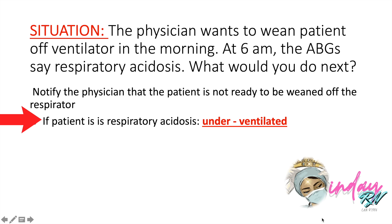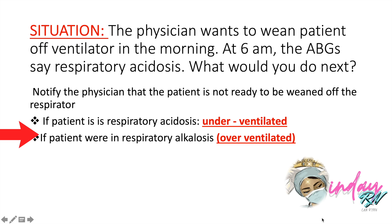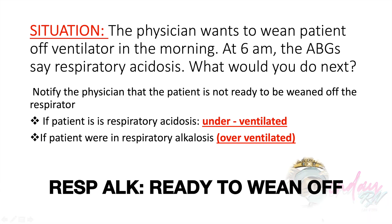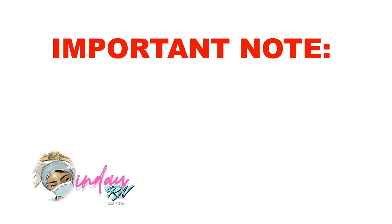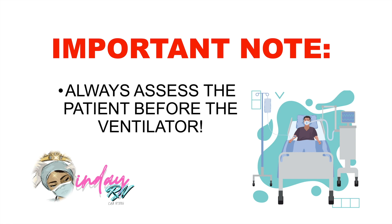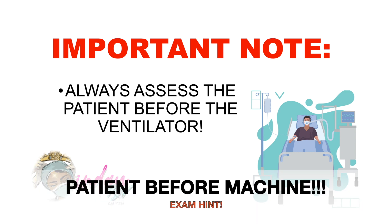If the patient has respiratory acidosis, they are under-ventilating and still need the mechanical ventilator — they are not ready to be weaned off. However, if the patient has respiratory alkalosis, they are over-ventilating, and you can notify the physician that the patient is ready for weaning. When caring for patients on mechanical ventilators, always assess the patient first before the ventilator when you hear an alarm — patient first, not the machine.